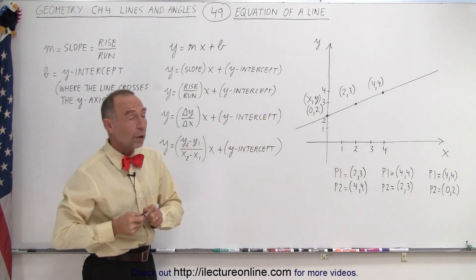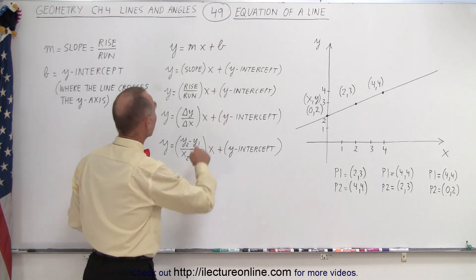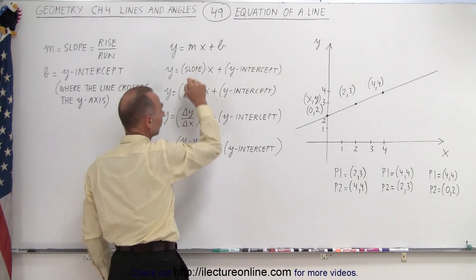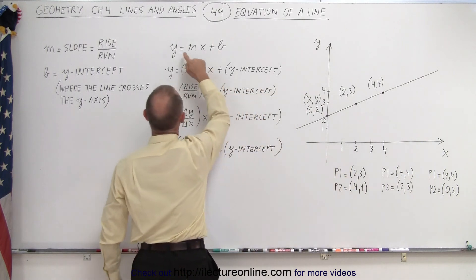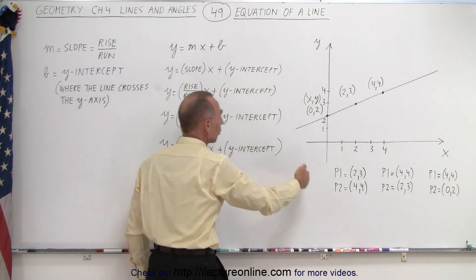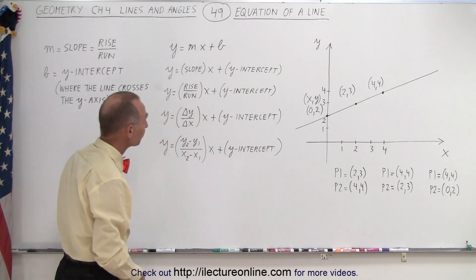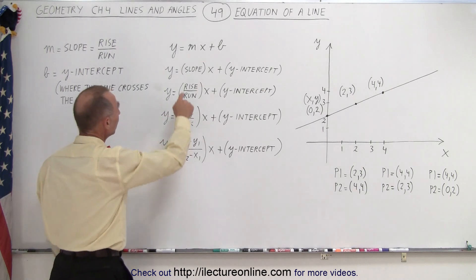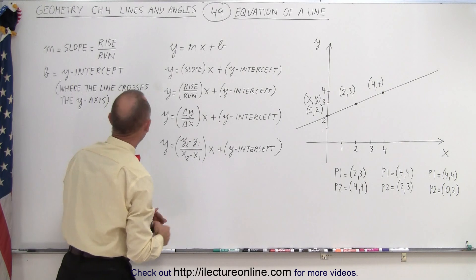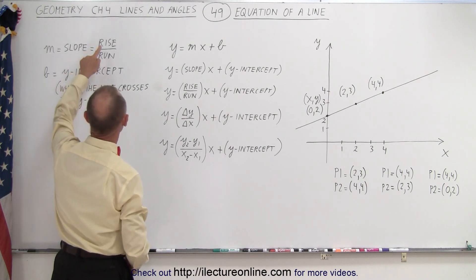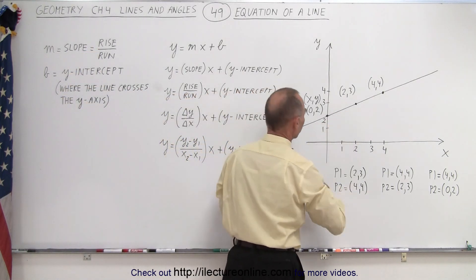Now the equation of a line will have the form y equals mx plus b. x represents the x coordinate of any point on the line, y represents the y coordinate of any point on the line, and m represents the slope of the line — that's the steepness of the line, defined by the rise over the run when you go from one point to another point.